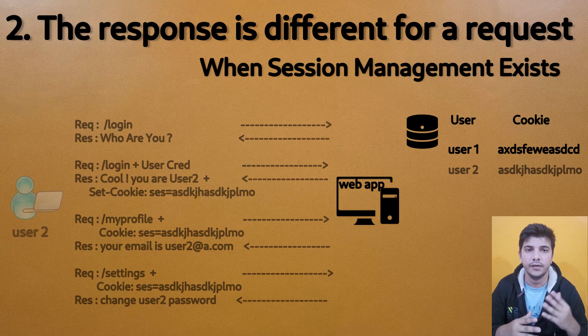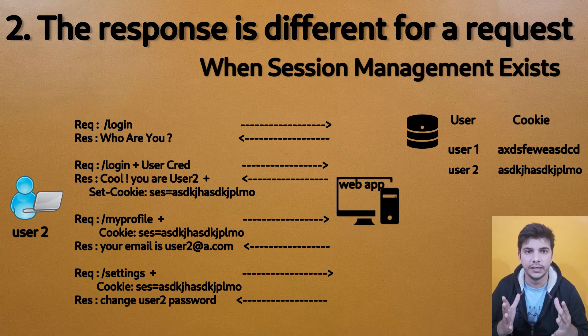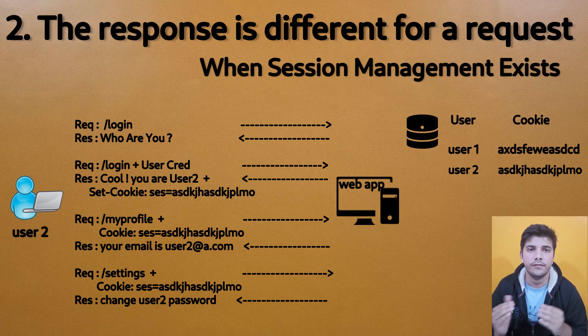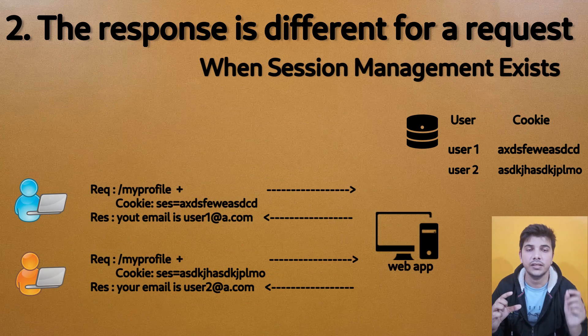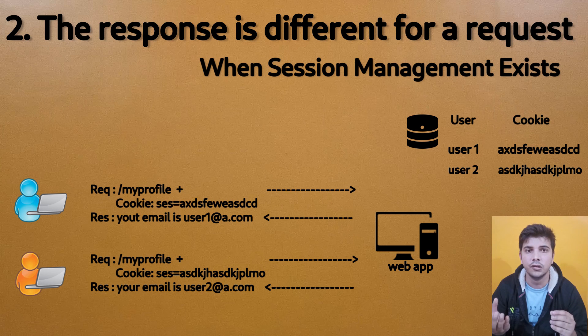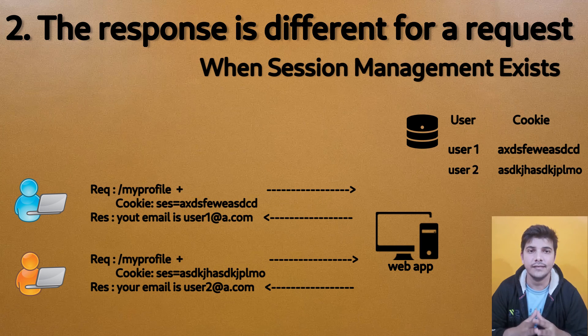The user is not authenticating to the server again — the browser automatically attaches the cookie value as a header, sends it to the web application, and the web application checks its database to find which user that cookie belongs to, and sends the appropriate response. The same approach works for multiple users, where each user has a unique cookie value. Whenever a request comes in with a particular cookie, the web application identifies the corresponding user, and the user is not required to authenticate again and again. That's all for today — I hope you liked the video. If you have any doubts please comment below, and I hope to see you in the next video.